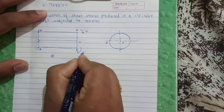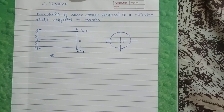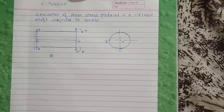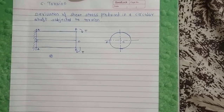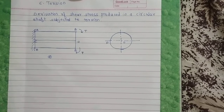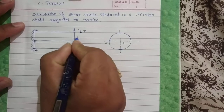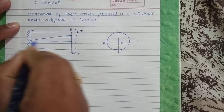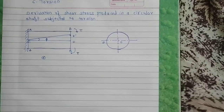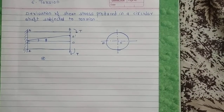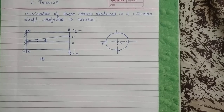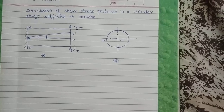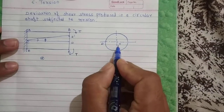Torque T is applied at end B. As a result of this torque T, the shaft at end B will rotate clockwise and every cross-section of the shaft will be subjected to shear stresses. The point D will shift to D'. So I will join this line — this is angle phi. Point D shifts to D' and hence line CD will deflect to CD', as shown in figure A. Similarly, in figure B, the line OD shifts to OD'.